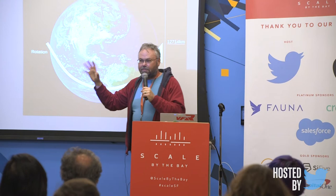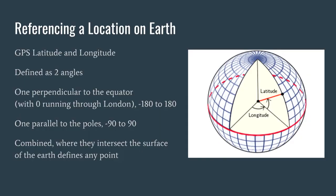It's also not even an ellipsoid, because there are different densities in the Earth and things pull on the crust in different ways. The upshot is that it's really hard to give a location on Earth in a standard way. The way most of us are used to is GPS lat/longs — you choose a center point, draw one angle out from the meridian and another up from the equator, and that gives you a point on the ground.